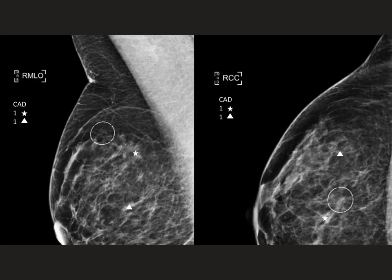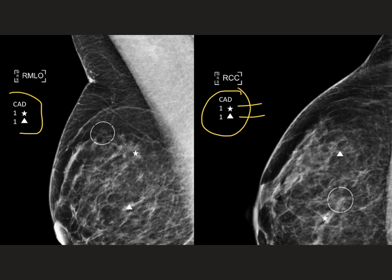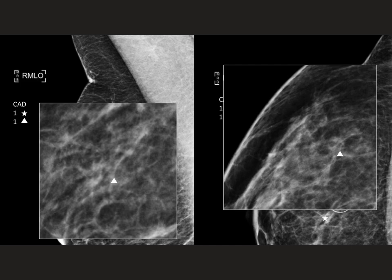My next screen shows the right MLO and right CC views at full, highest resolution, and also with the CAD markers on. Most systems use some form of computer-assisted detection and show the count of lesions identified on each image. On this particular study, they identified one asymmetry — those are stars on this system — and one triangle, which represents calcifications. I interrogate each of those identified areas to see if I believe it's a real abnormality or not. There are many, many false positives, unfortunately. In this case, I've decided the calcifications and asymmetries are not significant, and I move on with my systematic review.